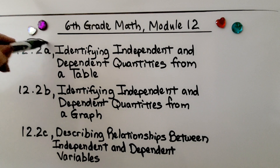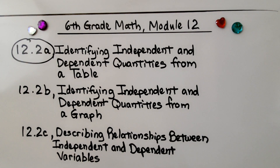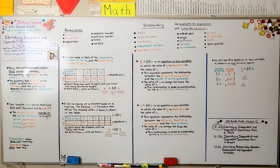We've finished the first part of this lesson. We're going to move on to the second part: identifying independent and dependent quantities from a graph. We're going to look at a coordinate plane and what these independent and dependent quantities look like on a coordinate plane. I hope you have a really nice day, and I hope you join me for the next lesson. Bye!